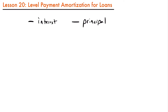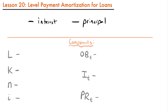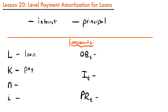Before we can look at an example, there are many different components we will use in the amortization method that I want you to be familiar with before we dive into the calculations. Here are the components. The first one is L, which represents the loan amount we are going to be repaying. Next we have K, which represents the amount of each payment.